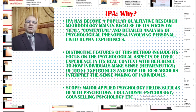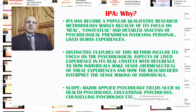The first level of double hermeneutics is that research participants make sense of and interpret their own experiences. The second level is that researchers then make sense of, or reinterpret, the way research participants interpret their experiences. So there is a kind of double interpretation in the IPA process. The scope of IPA includes psychology-related fields such as health psychology, educational psychology, and counseling psychology.